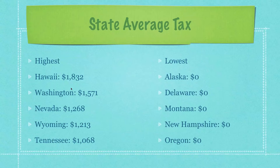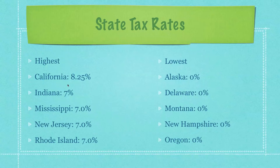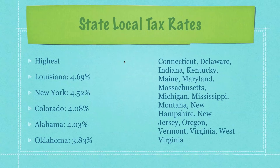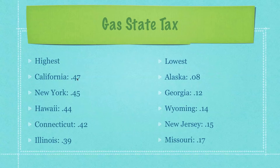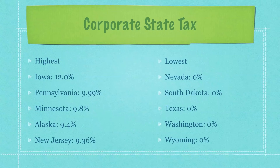Looking at state average taxes per capita: Hawaii has the highest at $1,832. Alaska, Delaware, Montana, New Hampshire, and Oregon pay nothing. The highest state tax rates are California, Indiana, Mississippi, New Jersey, and Rhode Island. For local taxes excluding school tax, you can see who pays the highest on the left and which states have zero. For gas taxes per gallon, California, New York, Hawaii, Connecticut, and Illinois have the highest rates. For corporate state taxes, Iowa has the highest, followed by Pennsylvania, Minnesota, Alaska, and New Jersey. Nevada, North Dakota, Texas, Washington, and Wyoming have zero corporate state taxes — and these are also states setting up dynasty trusts used by very wealthy people to escape estate taxes.